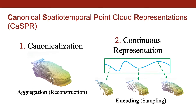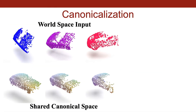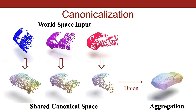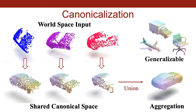Our method, CASPER, achieves this by first canonicalizing the point cloud sequence, and then building a continuous representation on top of this canonical space. The goal of canonicalization is to factor out extrinsic object properties like pose while aggregating intrinsic shape over time. By mapping each input point to a canonical space, CASPER operates directly on world space sequences, allows shape aggregation through a simple union, and enables learning generalizable representations.